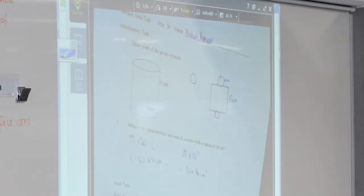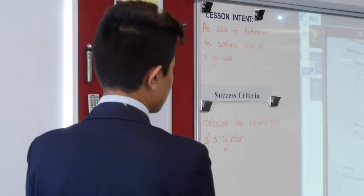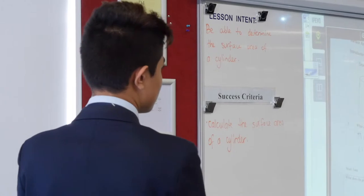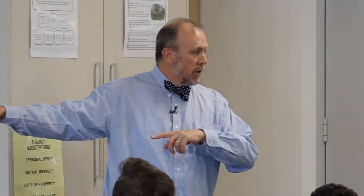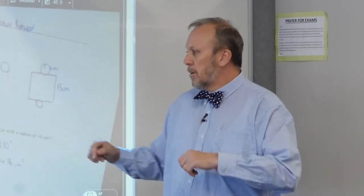For the other part, to get the area you have to do pi r squared. So pi times 10 squared gave 314.16 cm squared. Any questions for Rishav on that one? We happy with that?